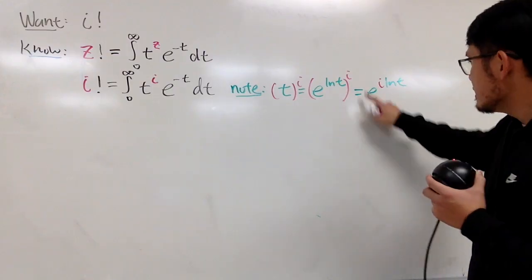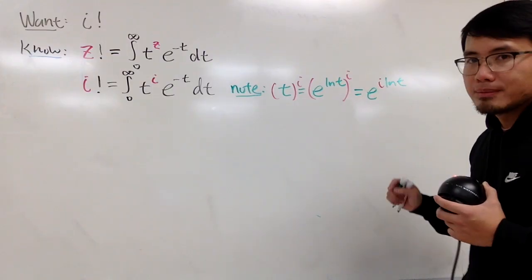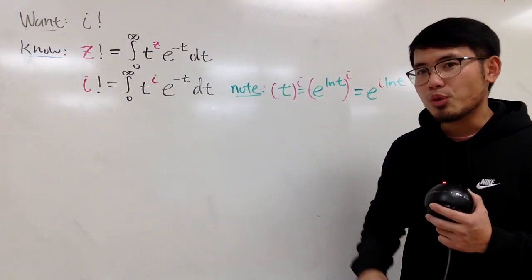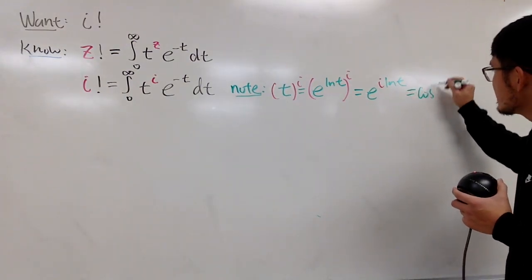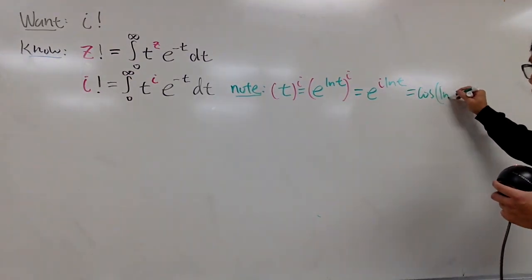And the beauty of this is that this is in the form of e to the i theta. So, we can just use the Euler's formula, taking theta to be ln t. In other words, we get cosine of theta, which is ln t.